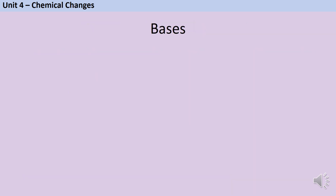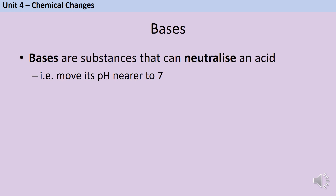To that acid, we need to add a base. A base is anything that can neutralize an acid — something that can move the pH nearer to seven. When you were first learning about acids, you might have learned that the opposite of an acid was an alkali. Alkalis are one type of base — they can neutralize acids — but alkalis are soluble bases. For this practical, we need an insoluble base, something that won't dissolve. So there are two types of insoluble base you should know about: metal oxides and metal carbonates.